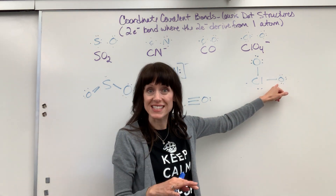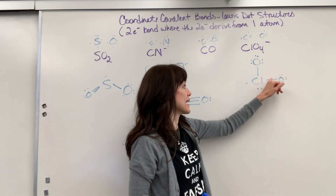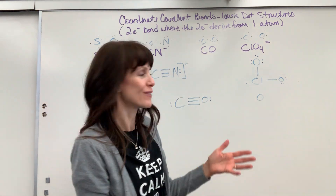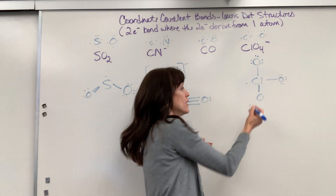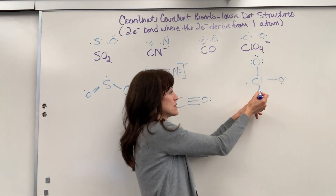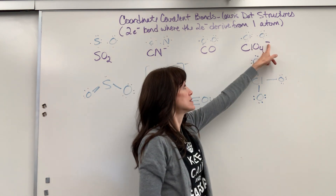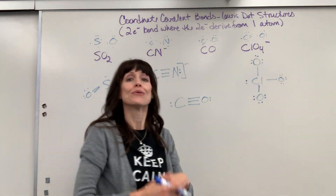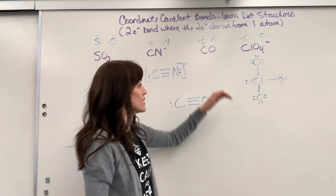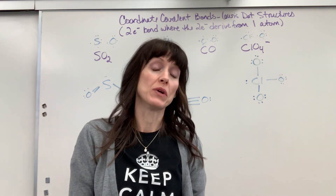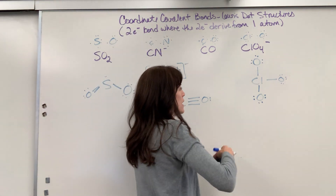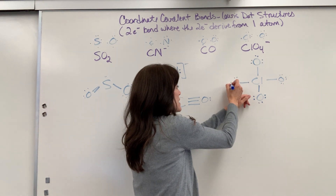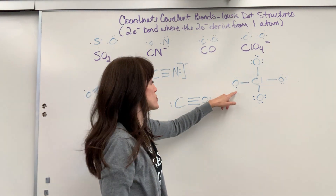Another oxygen moves in — coordinate covalent — the lone pair from chlorine forms the single bond. That oxygen still has its six valence electrons and senses eight. One more: another oxygen says, 'Hey, let's share but I won't give you anything.' Those two electrons become the bond. The oxygen still had its six valence electrons and senses eight. This is an anion, so there's an extra electron. I'll place that extra electron on chlorine, meaning the fourth and final oxygen moves in, and chlorine does one more coordinate covalent bond.